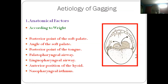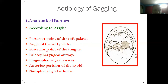Etiology of gagging — why does the gagging feeling occur? There are several factors, divided into various categories. The first is anatomical factors. These are the different anatomical locations where the trigger points of the gag reflex are present in the oral cavity, such as the posterior point of the soft palate and the angle of the soft palate. If you touch the posterior part of the palate — even with your finger only — you will definitely have a sense of gagging.